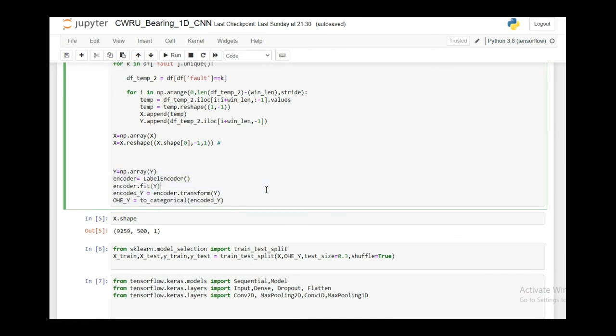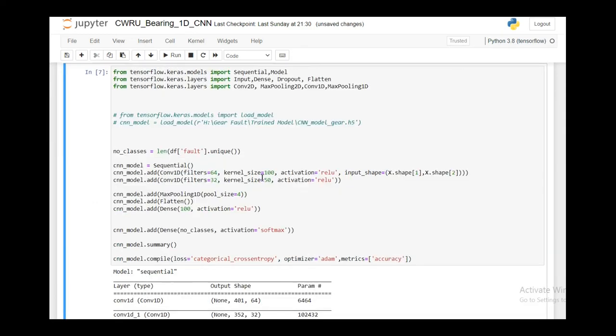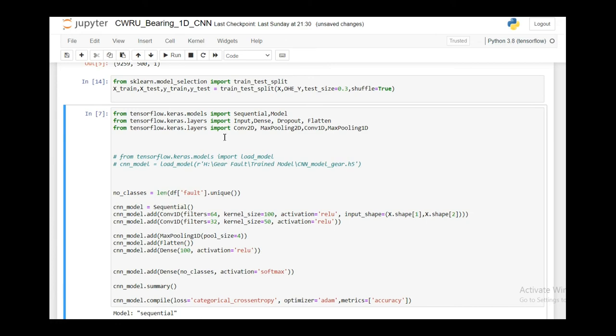If you see x dot shape, each of my inputs has 500 cross one dimension. Then I'll do training and test split of the data and then I'm creating the convolutional model.